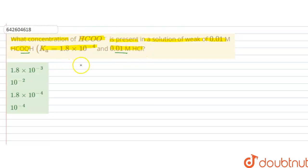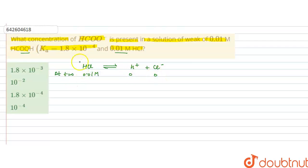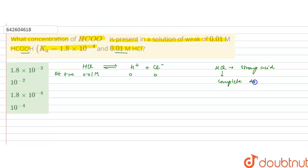First of all, HCl that is present will dissociate to give H⁺ and Cl⁻ ions. At time T=0 it is present at 0.01 molar. HCl is a strong acid, so complete dissociation will take place. On complete dissociation at equilibrium its concentration will be reduced to 0, giving 0.01 molar H⁺ and 0.01 molar Cl⁻ ions.